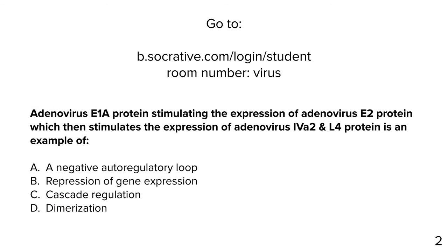Question: Is adenovirus E1A stimulating E2, which stimulates 4A2 and L4 proteins, an example of negative autoregulatory loop, repression of gene expression, cascade regulation, or dimerization? The answer is C — cascade regulation. One activates another, activates another. The whole concept is a cascade, though it may also involve shutting off of immediate early genes.